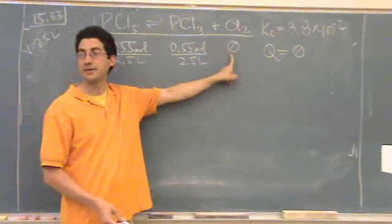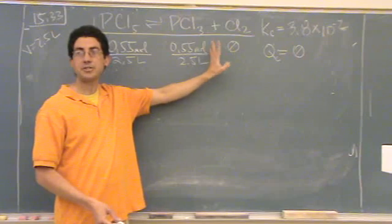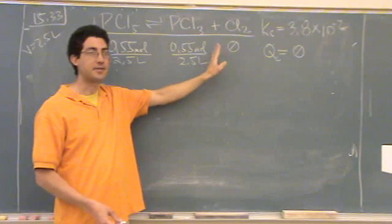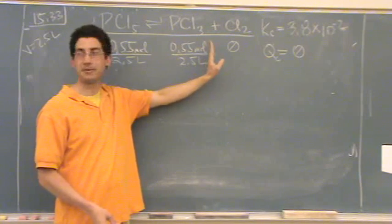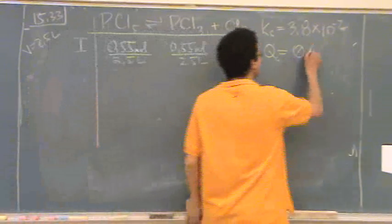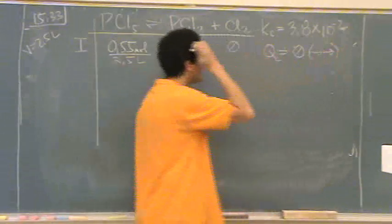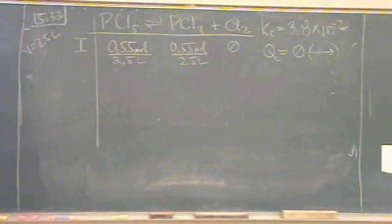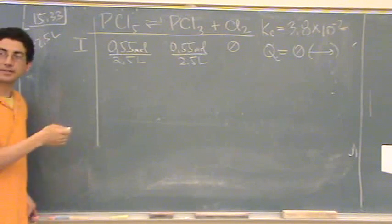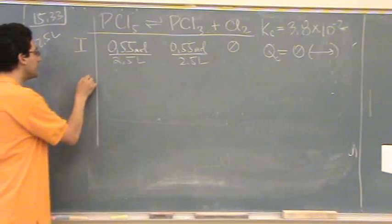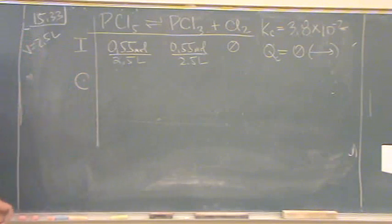And there's another way you could say it: there's zero here, it always shifts towards the zero. You cannot have a zero at equilibrium - impossible. So it must shift this way to the right, towards the products. If there's ever a zero, it goes towards that direction. In this case, the zero is in the product, so it goes towards the products. Now I have to know that before I can do the C column - C meaning change.